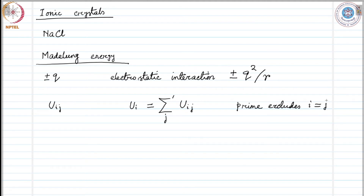Now we suppose that u_ij may be written as the sum of a central field kind of repulsive potential on top of the electrostatic interaction. The central field kind of repulsive potential we will call a repulsive potential from now onwards.